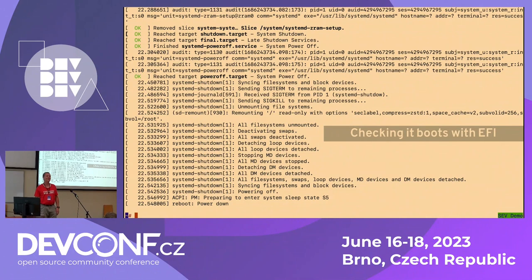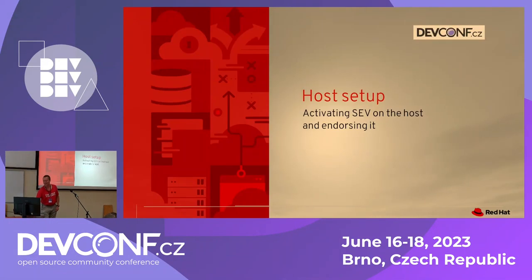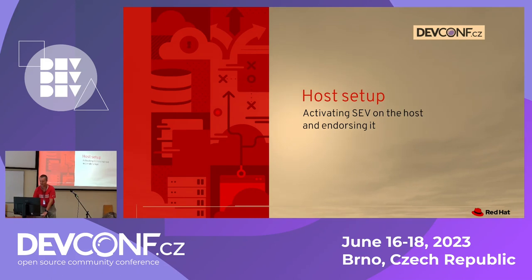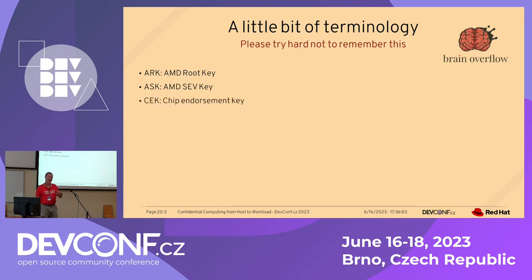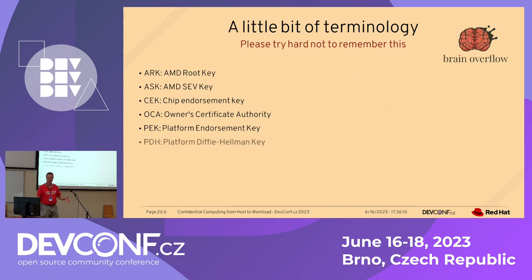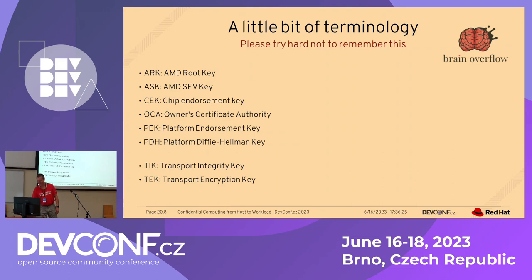Before I can activate SEV, I need to activate it on the host and endorse it. AMD is very generous with acronyms. ARK stands for AMD Root Key. ASK stands for AMD SEV Key. CEK is a Chip Endorsement Key. OCA is the Owner's Certificate Authority. PEK is a Platform Endorsement Key. PDH is a Platform Diffie-Hellman Key. You need to know all of this — there will be a question at the end. And there are two more: TICK and TECK. You can read.